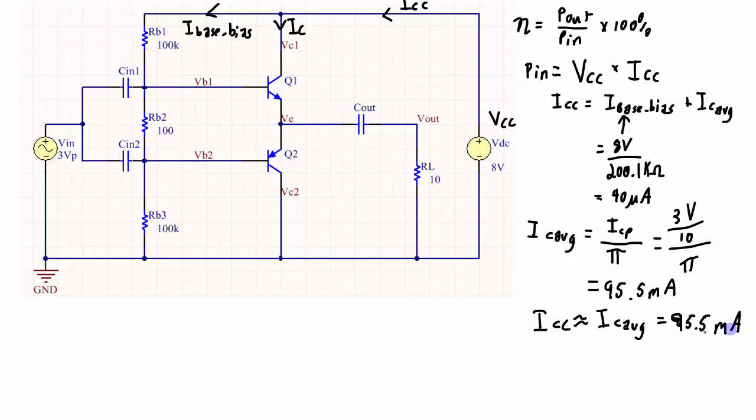And then putting all this together to calculate my input power, P in is VCC of 8 volts times 95.5 milliamps which equals 764 milliwatts.